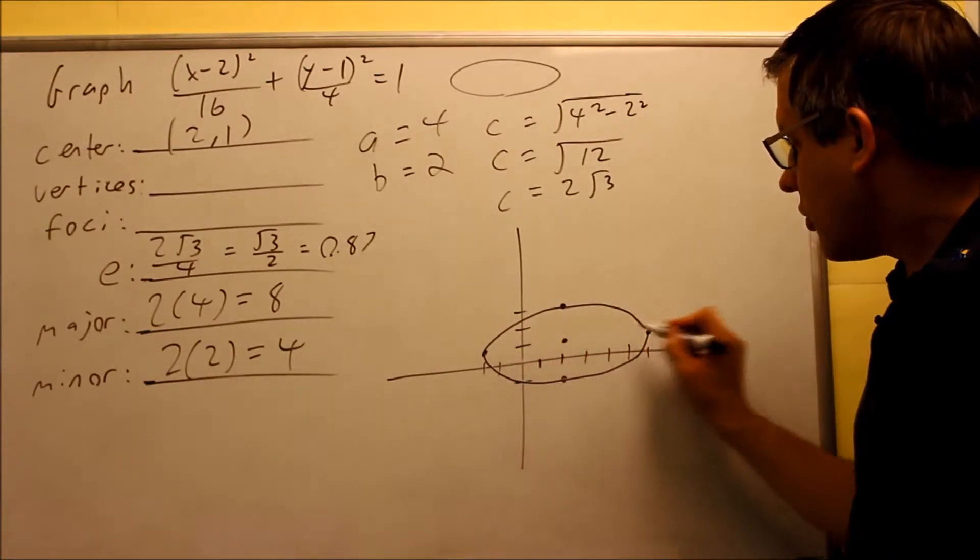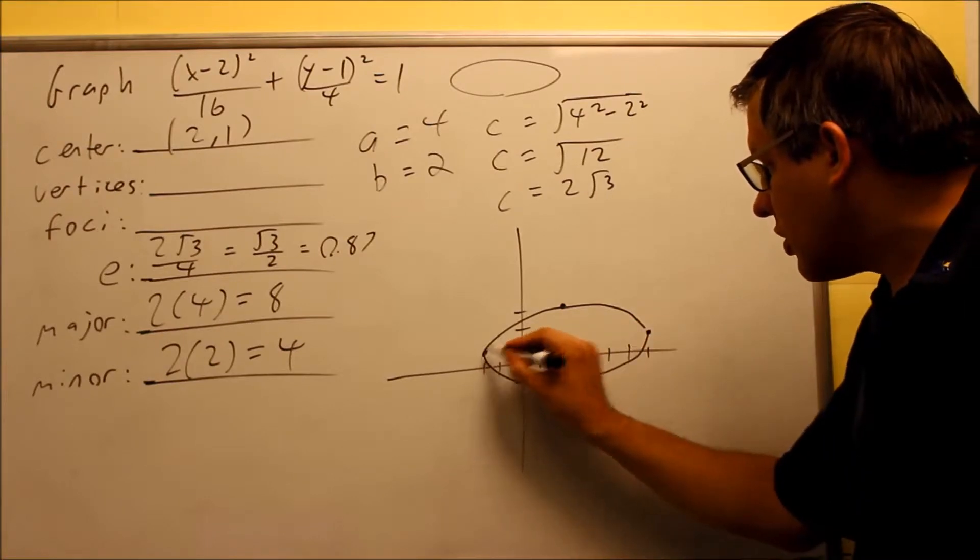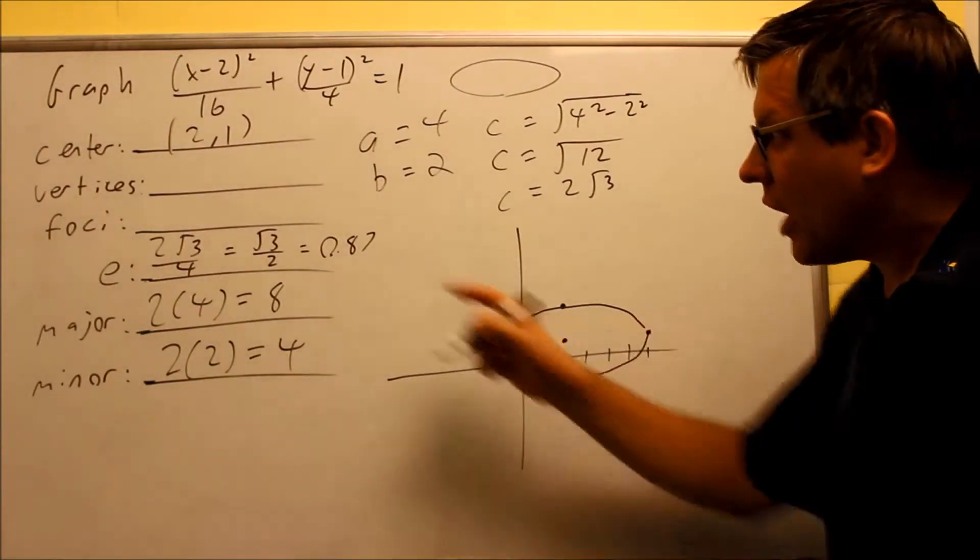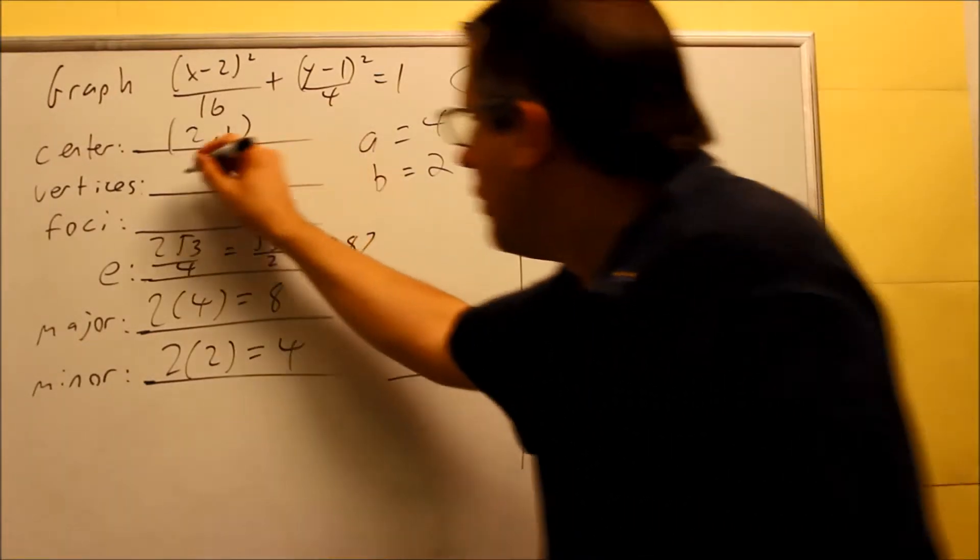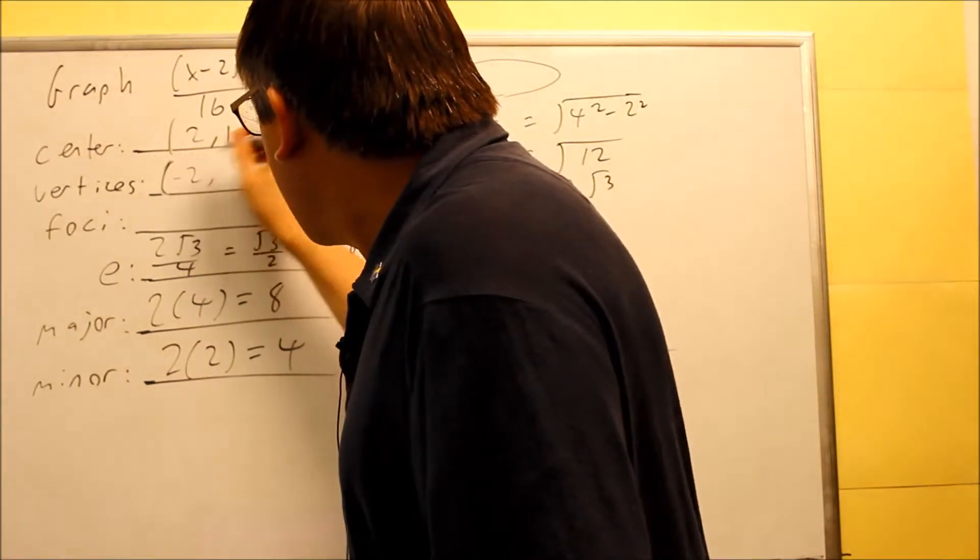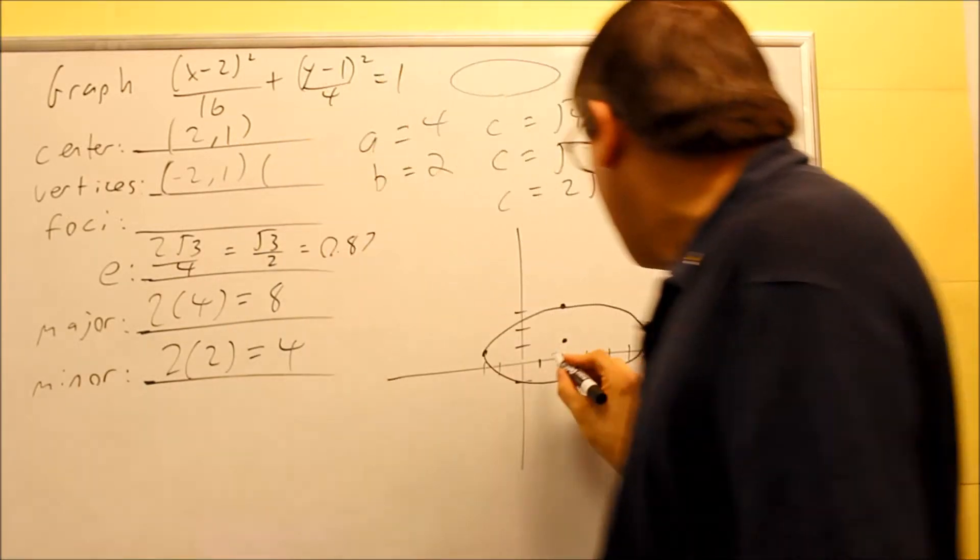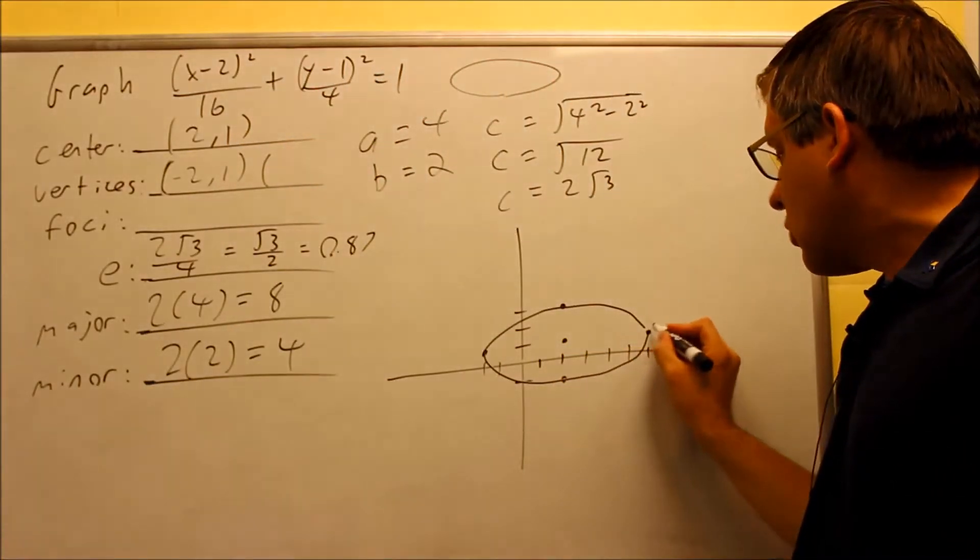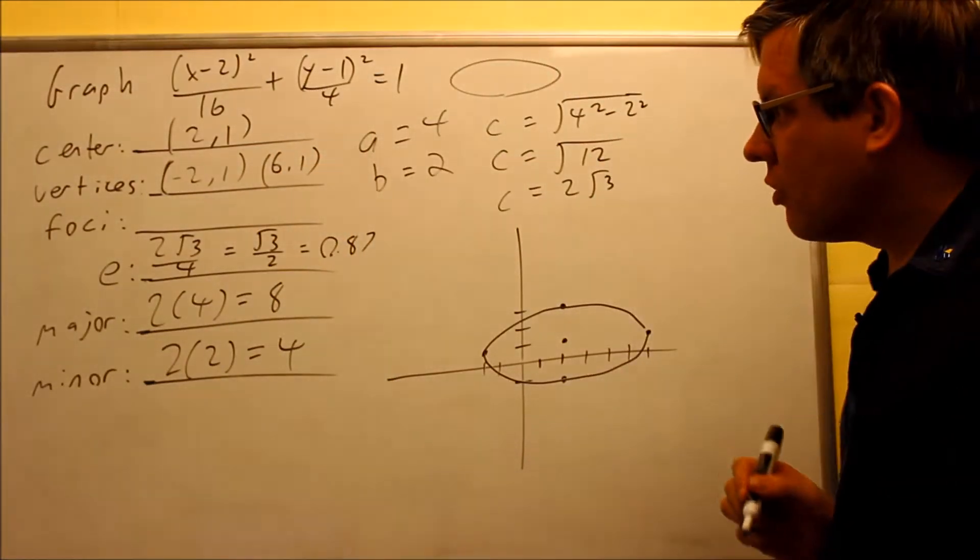Now the vertices are the ones that are on the long ends. So I'm going to read these two coordinates, this one and this one. I'm going to read those off the graph, and that's the other piece of information they're asking for. I have (-2,1) and also I have, if I count this, it's going to be (6,1). So I have that.